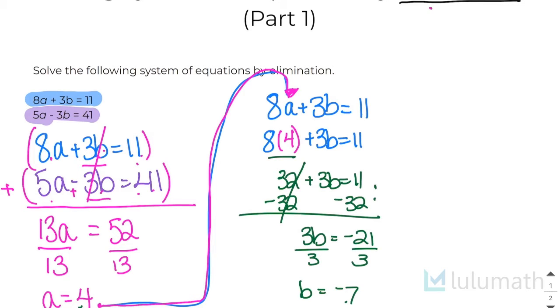We've solved our system because we've solved both variables. So that means that our solution is going to be 4 negative 7. When we write our solution for an answer that is not just x and y, we just put it in alphabetical order.